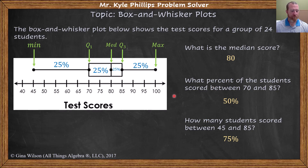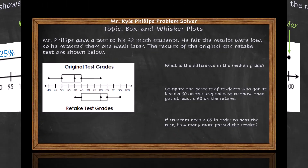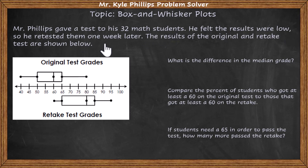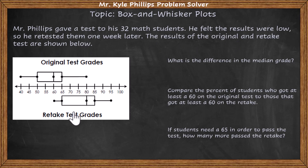Let's take a look at another example. Mr. Phillips gave a test to 32 of his math students. He felt the results were low, so he retested them one week later. The results of the original and the retake are shown below with these two box and whisker plots.